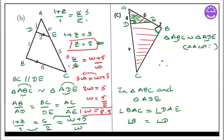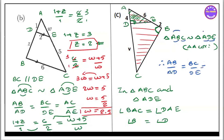If you want to write AB by AD equal to BC by DE, and BC by DE equal to AC by AE. If you want to write AB by AD, A, B, C and 6 plus 2 by AD.